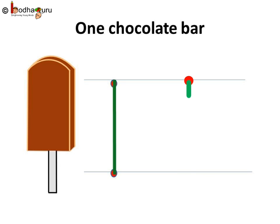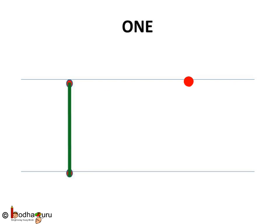How about a chocolate bar? One chocolate bar. Again, standing line starting from one dot to the second dot.